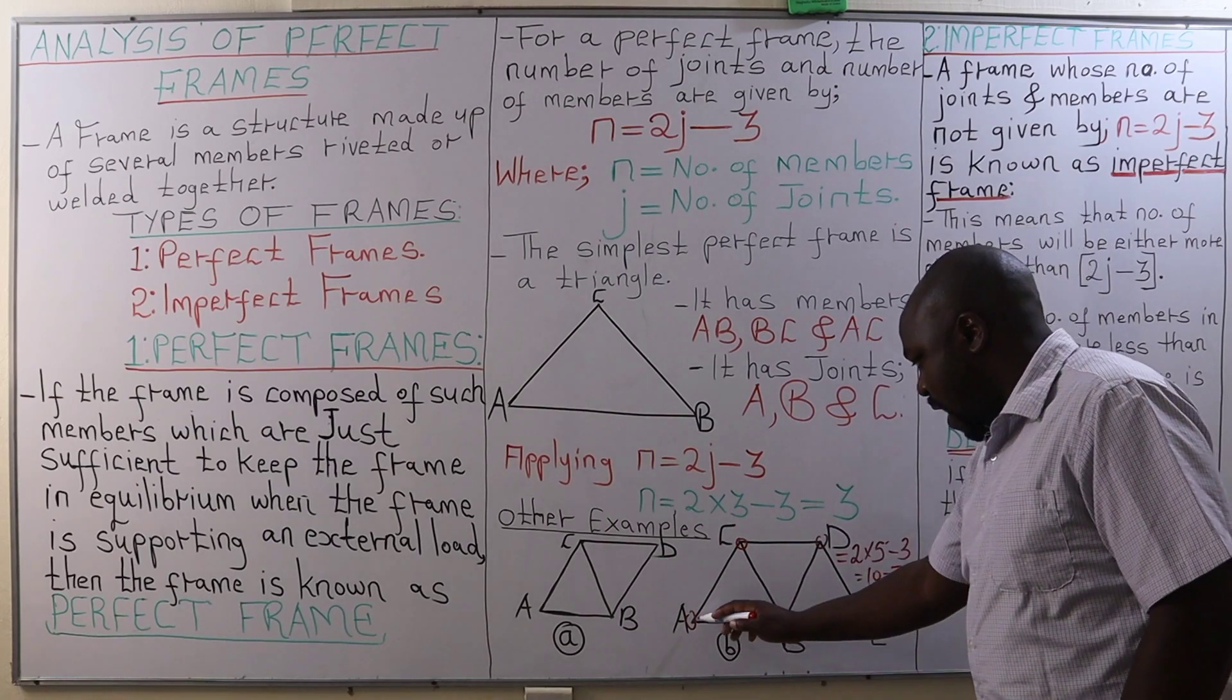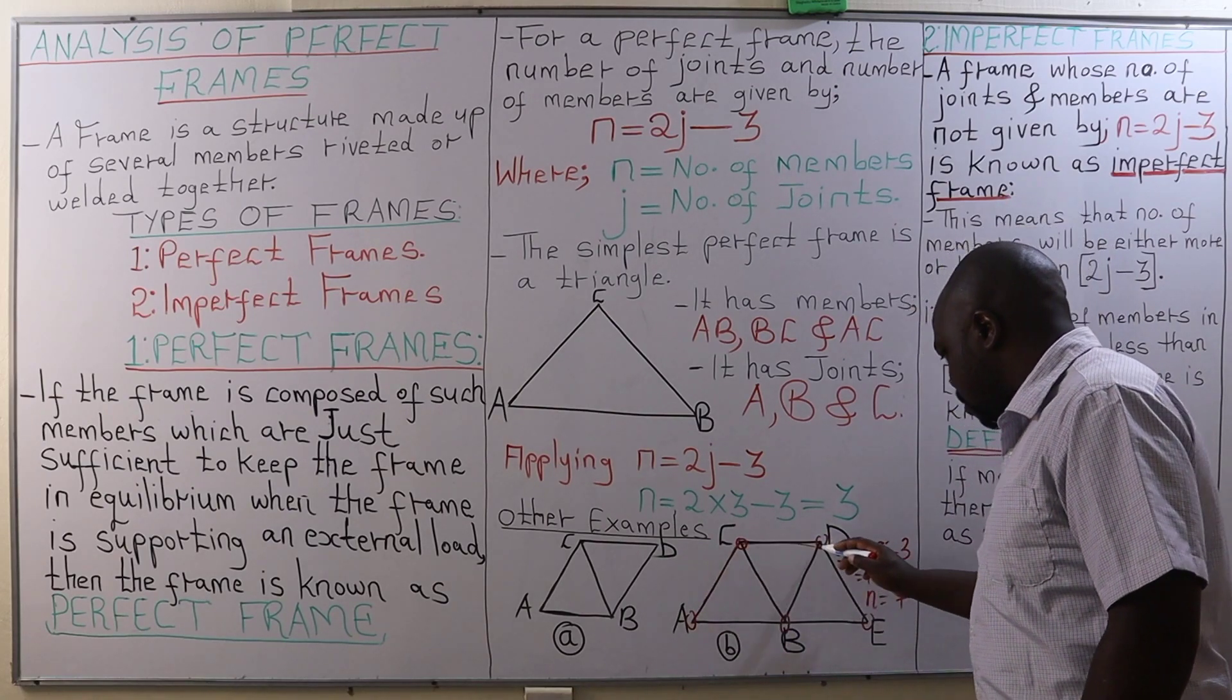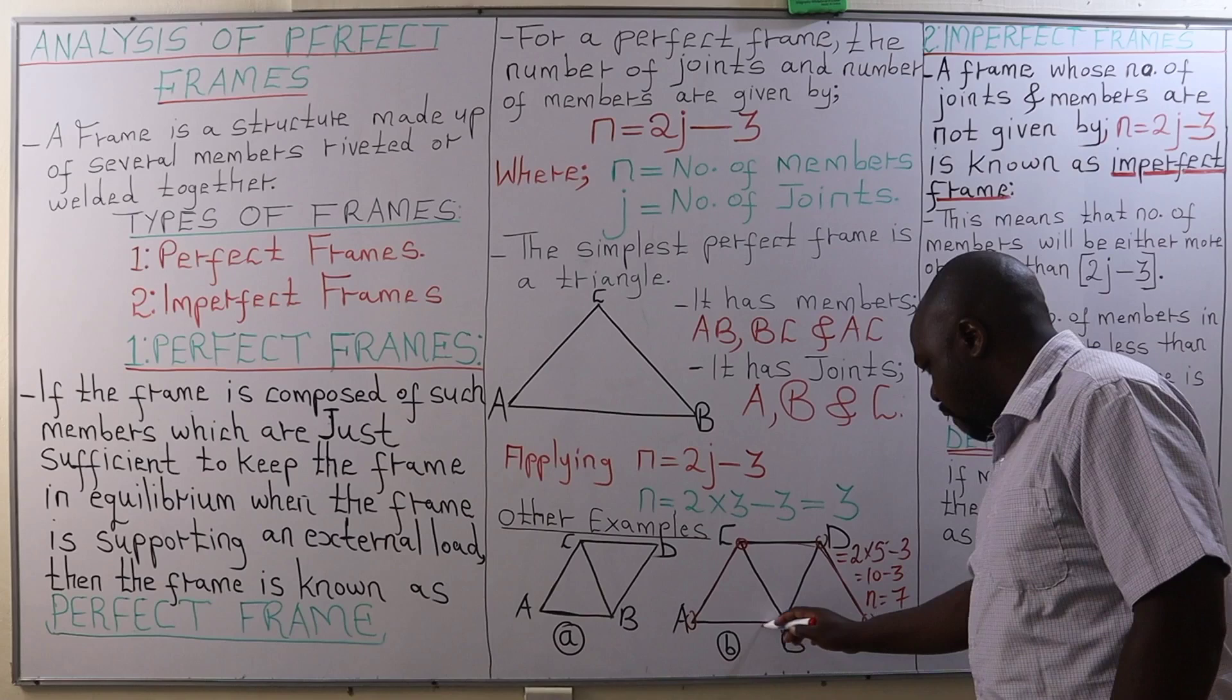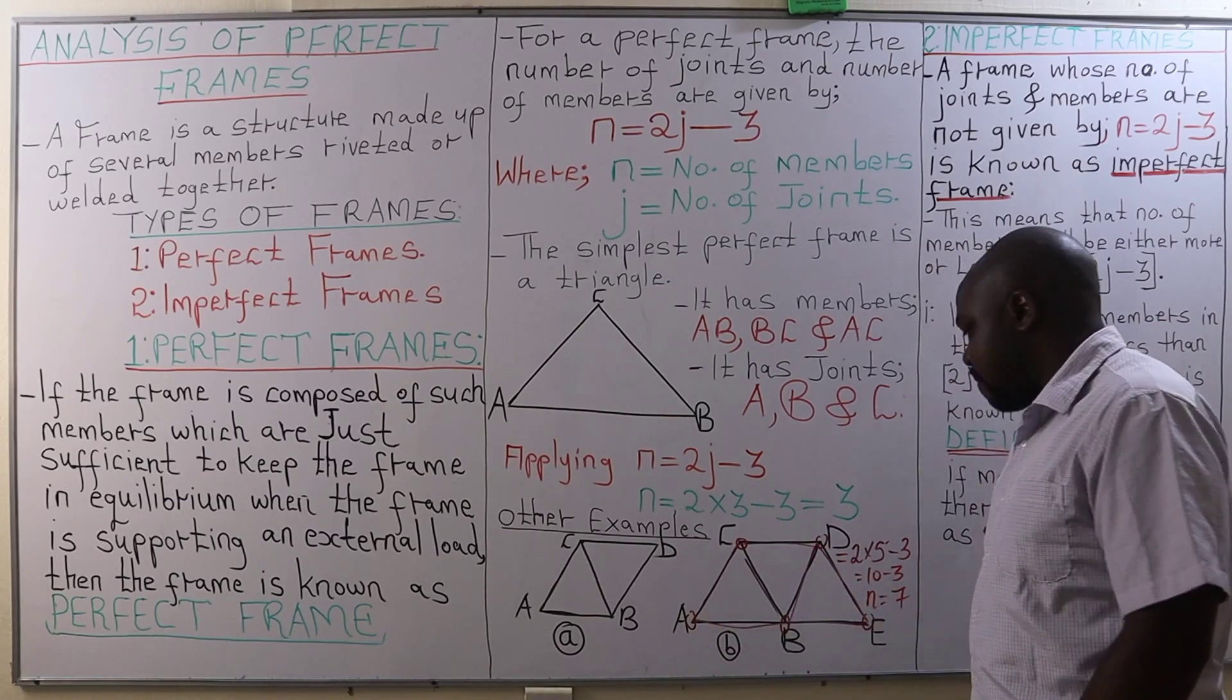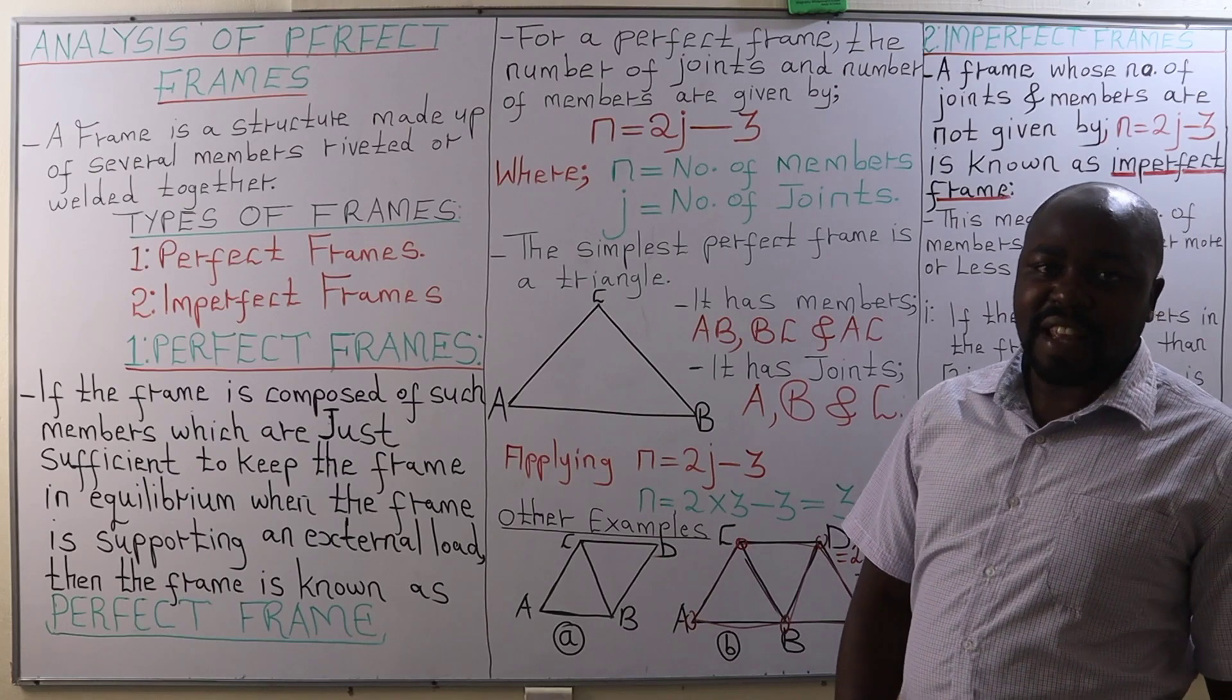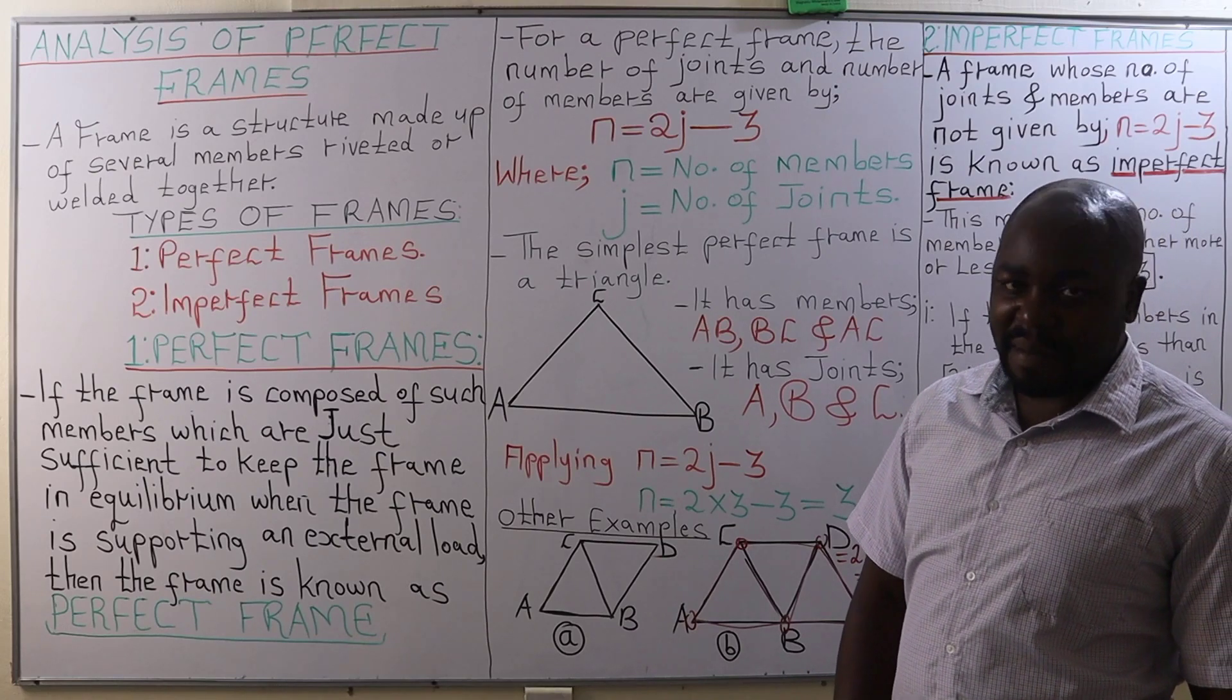Let's see whether they are 7. So, we have 1, 2, 3, 4, 5, 6, 7. There are 7 members.